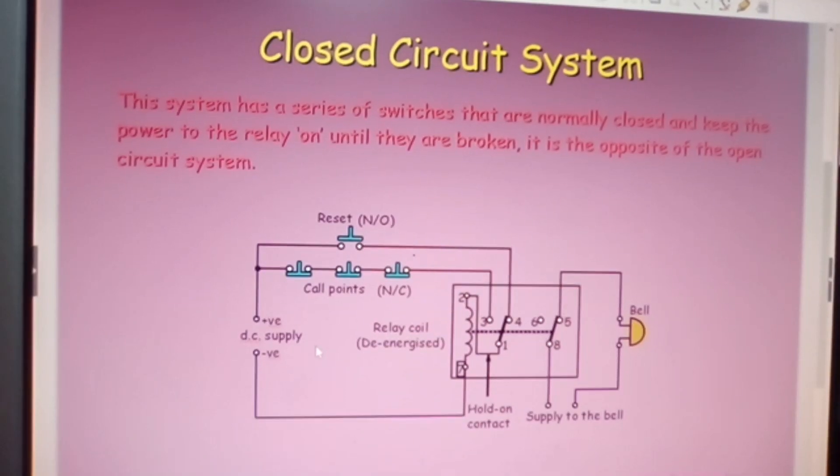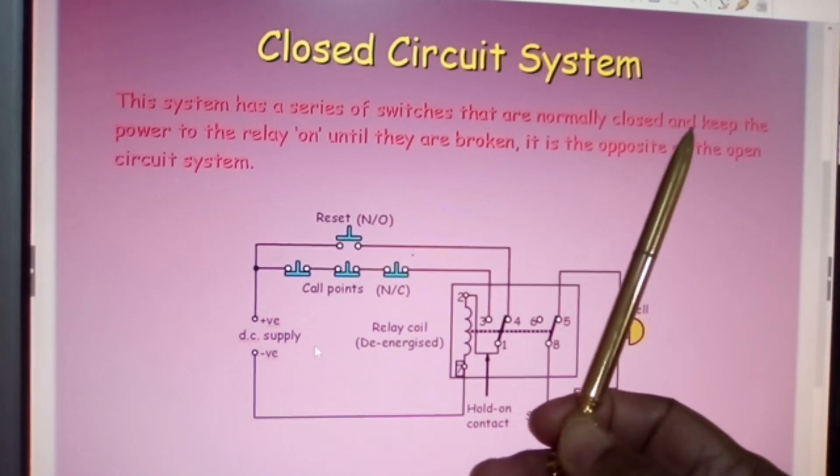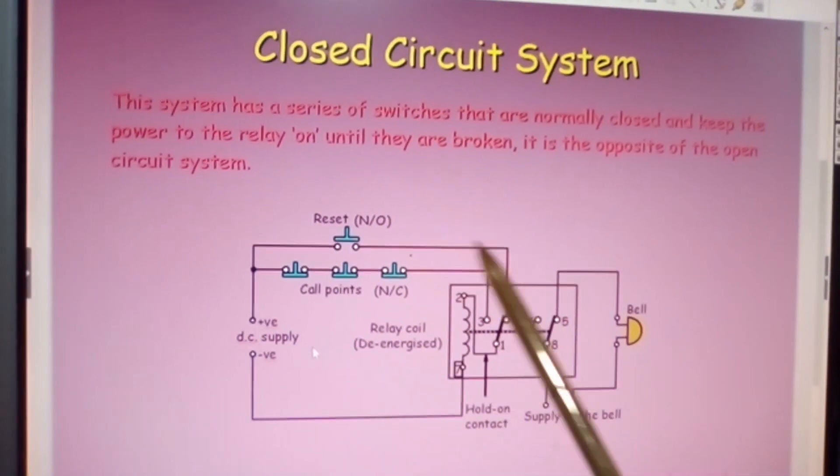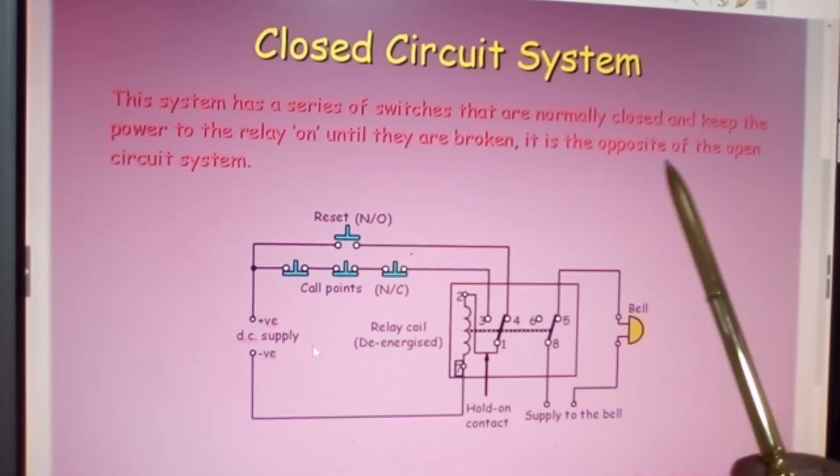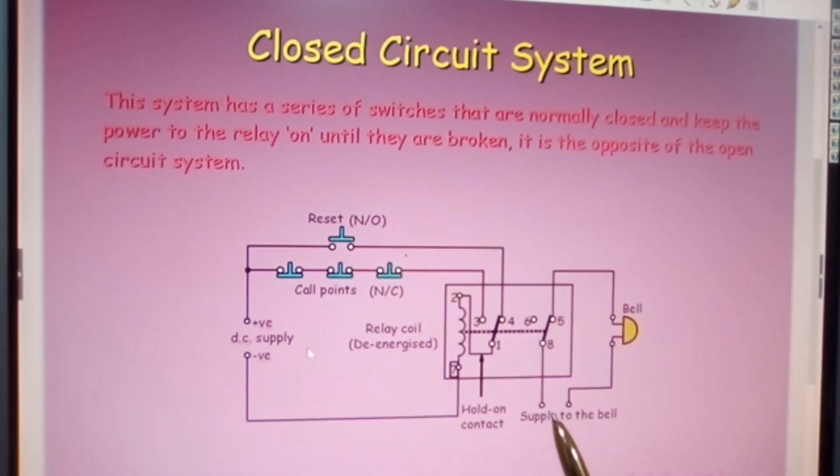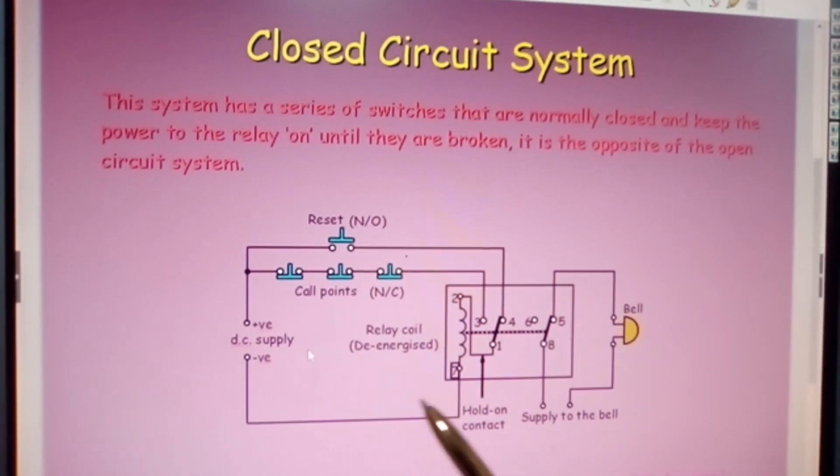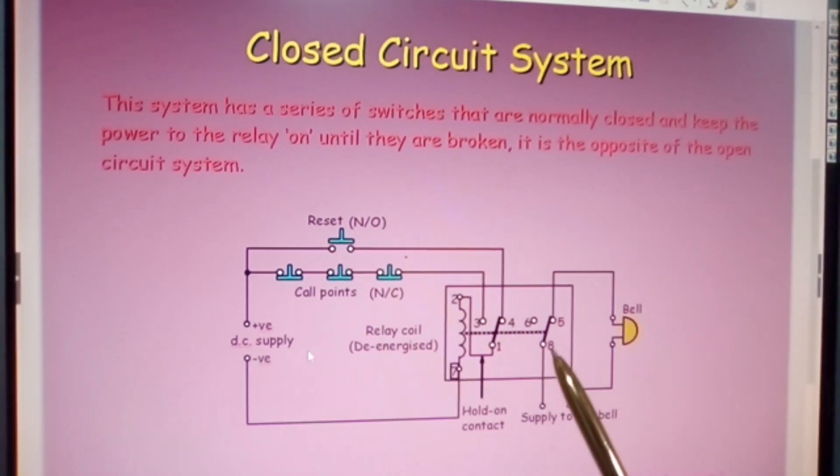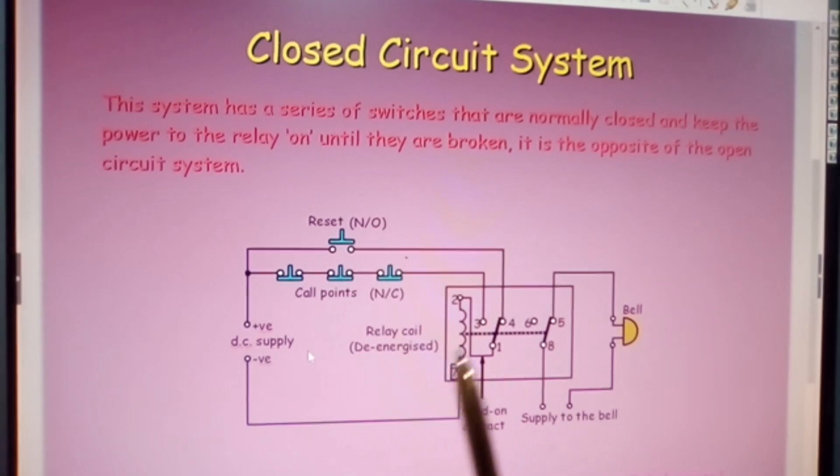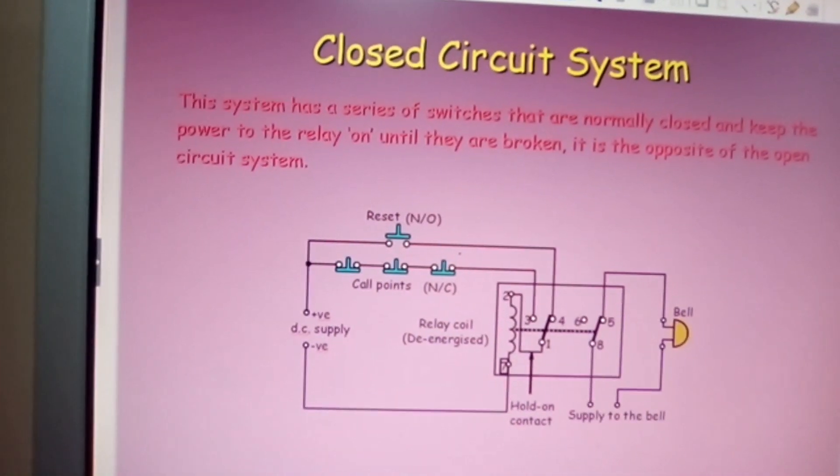Close circuit system. This system has a series of switches that are normally closed and keep the power to the relay on until they are broken. It is the opposite of the open circuit system. Basically, it keeps you energized into one position and then, if you want it, it breaks a given contact and the water will ring when the contact just goes the other direction.